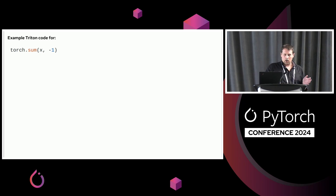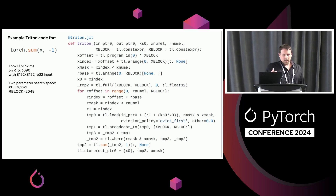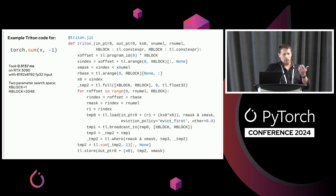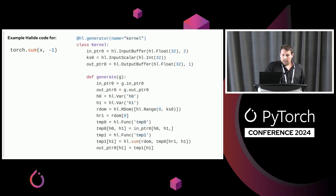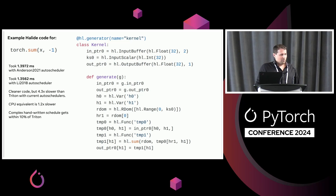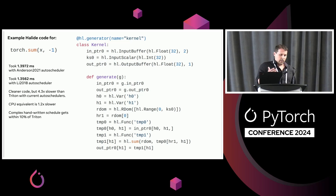Here's some example code generation, comparing what we generate for Triton versus Halide. Here's some Torch Inductor-generated Triton code for a simple sum of operations. What the Triton code looks like is: you have a block accumulator, you slide that block accumulator across all your data, and at the very end you do a shared memory reduction to go down to a single element. On my local machine, this takes about a third of a millisecond. Here's the same code using the Halide backend — notably this code is simpler because we haven't encoded the block accumulation logic in the schedule. But the problem is that it's more than 4x slower than the Triton code, and the CPU equivalent is about 1.2x slower than the C++ backend.